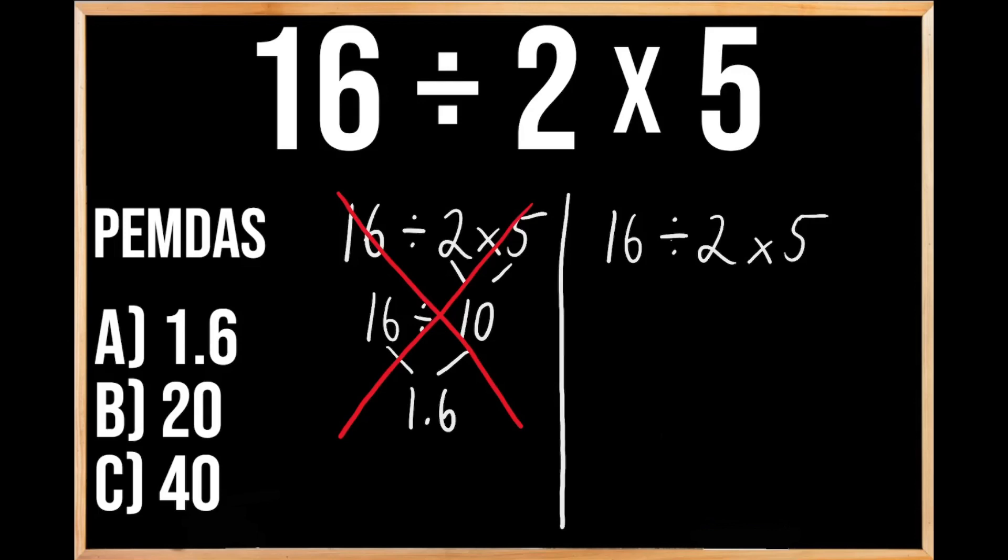The P in PEMDAS stands for parentheses, and the E stands for exponents, and since we don't have either one of those, we're going to move on to our next priority of multiplication or division.